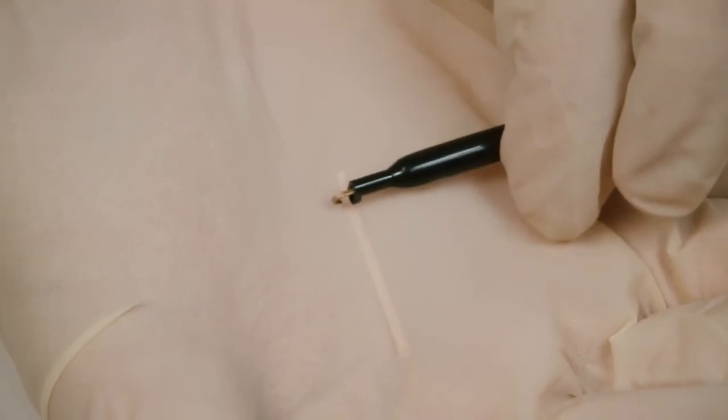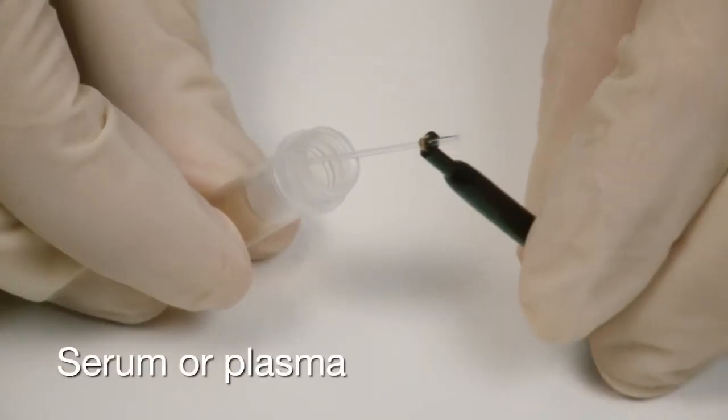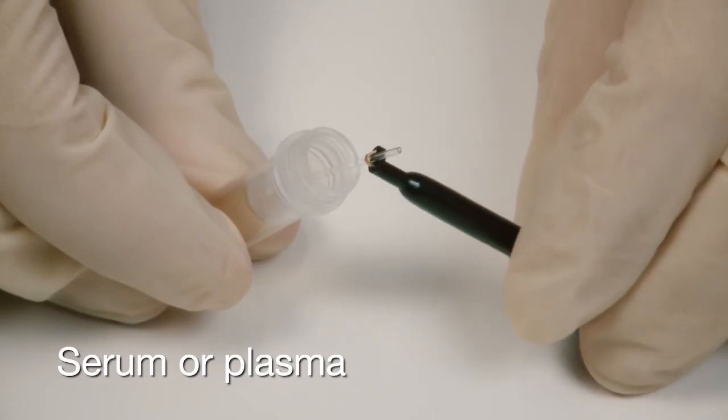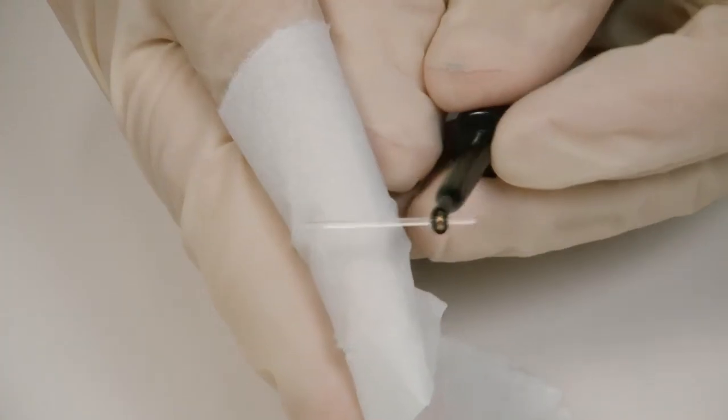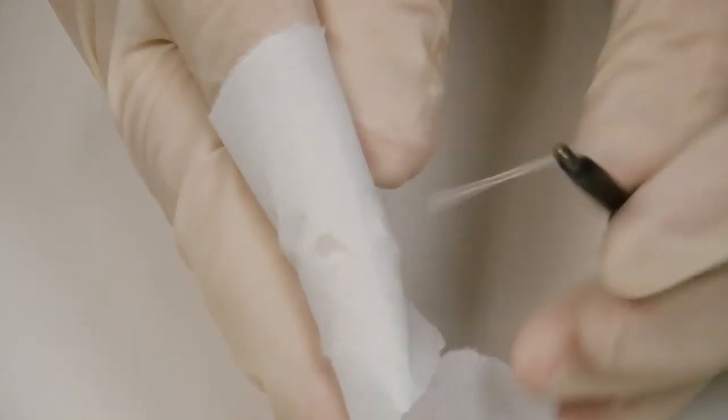Use the capillary holder for capillary handling. Collect the serum or plasma using the 3 µL glass capillary. Make sure it's completely full and that there are no bubbles inside the capillary. Wipe off excess fluid on the outside of the capillary using tissue paper.